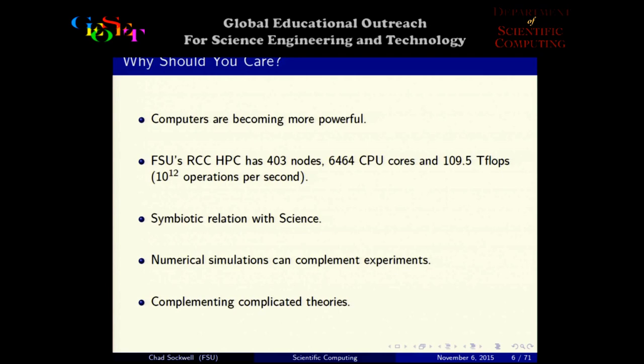Today science and computers play a symbiotic role. If you read research papers on physics, chemistry, or biology, you'll see that a lot of the work involves computers and running data — we now have so much data for things that we need computers to handle it. You can also do numerical simulations to complement experiments and theory, which we'll go over shortly.